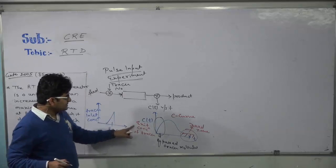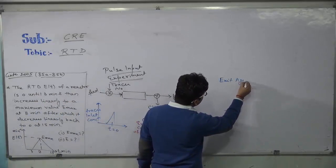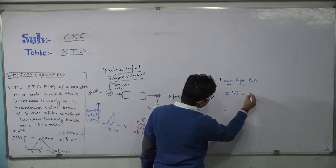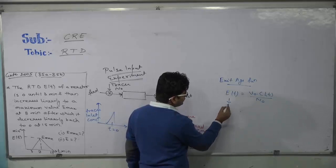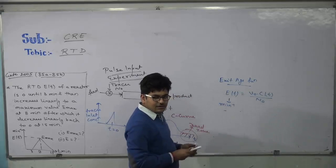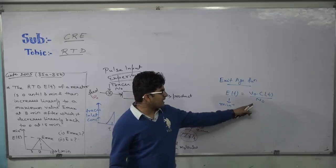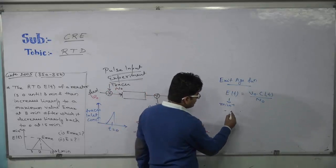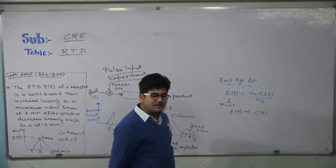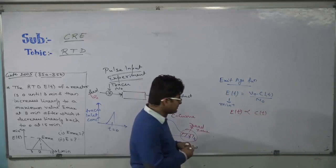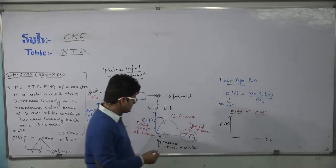The exit concentration versus time curve is known as the C curve. We define here one parameter: the exit age function E(t), given by E(t) = v₀·C(t) / N₀, where the units of E(t) are minutes inverse. Here, v₀ is the feed rate, which is constant, and N₀ is the amount of tracer injected, also constant. So E(t) is directly proportional to C(t).